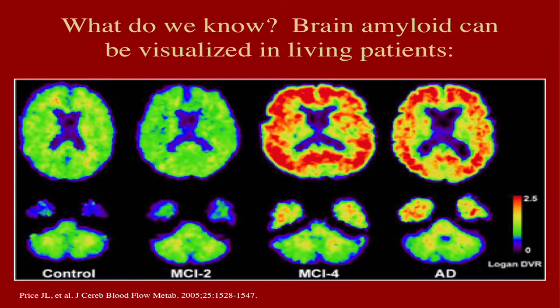There are now PET scans which allow us to see whether somebody has amyloid in their brain or not. The colors on PET scans are set so that warm-feeling colors are the hot signals. In the patient with Alzheimer's disease, it's a hot-looking scan because there's a lot of amyloid, whereas in the control subject it's a very cold-looking scan because there's no amyloid. In people with mild cognitive impairment, some have hot scans and some have cold scans. The older PET scans available for many years looked at rates of metabolism, and the differences between Alzheimer's and controls were really quite subtle.